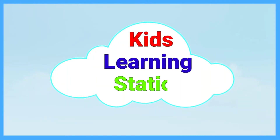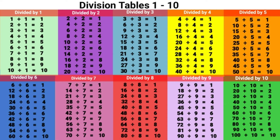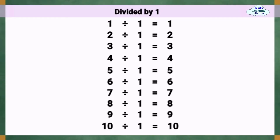Kids Learning Station: Division 1 to 10. Divided by 1. 1 divided by 1 equals 1. 2 divided by 1 equals 2. 3 divided by 1 equals 3. 4 divided by 1 equals 4. 5 divided by 1 equals 5. 6 divided by 1 equals 6. 7 divided by 1 equals 7. 8 divided by 1 equals 8. 9 divided by 1 equals 9. 10 divided by 1 equals 10.